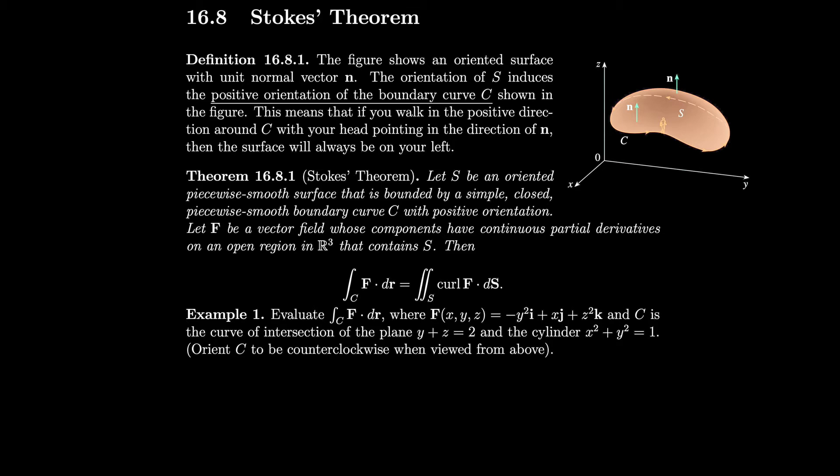So if S is an oriented piecewise smooth surface bounded by a simple closed piecewise smooth boundary curve C with positive orientation, and F is a vector field whose components have continuous partial derivatives on an open region in R³ that contains S, then the line integral F·dr equals the surface integral of the curl of F·dS.